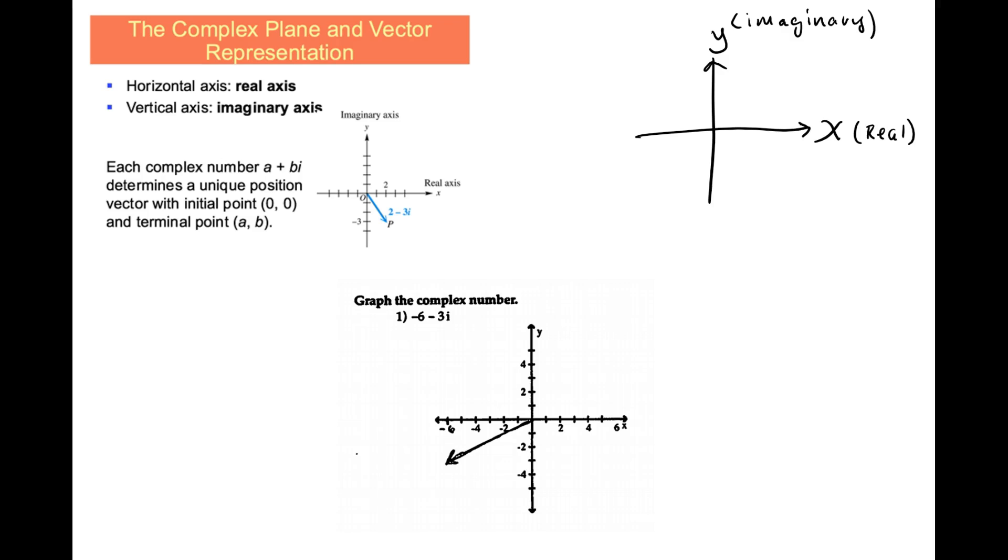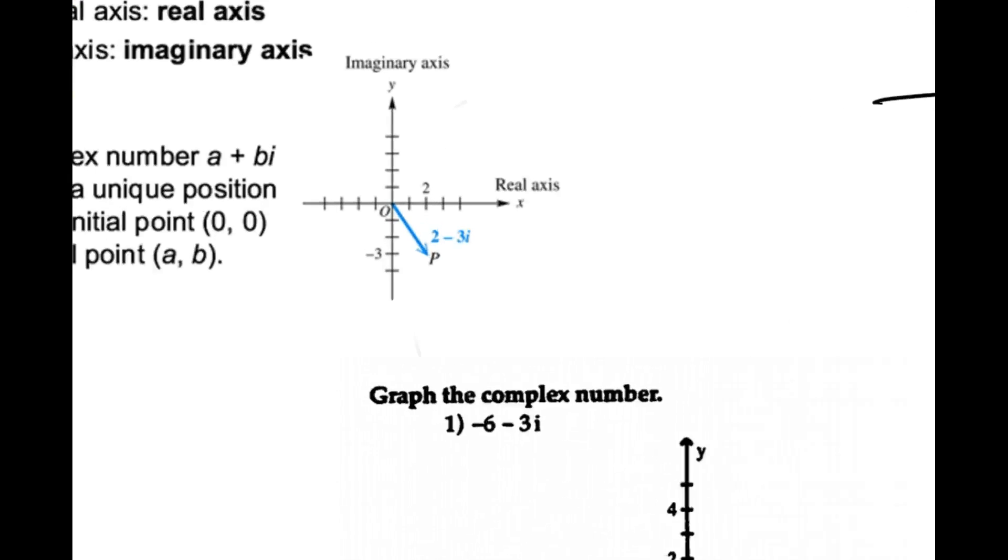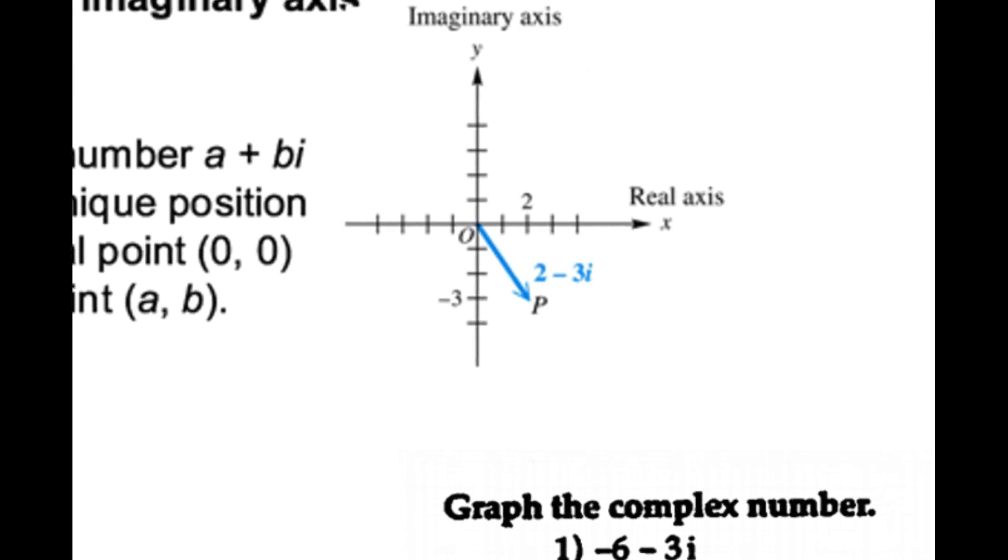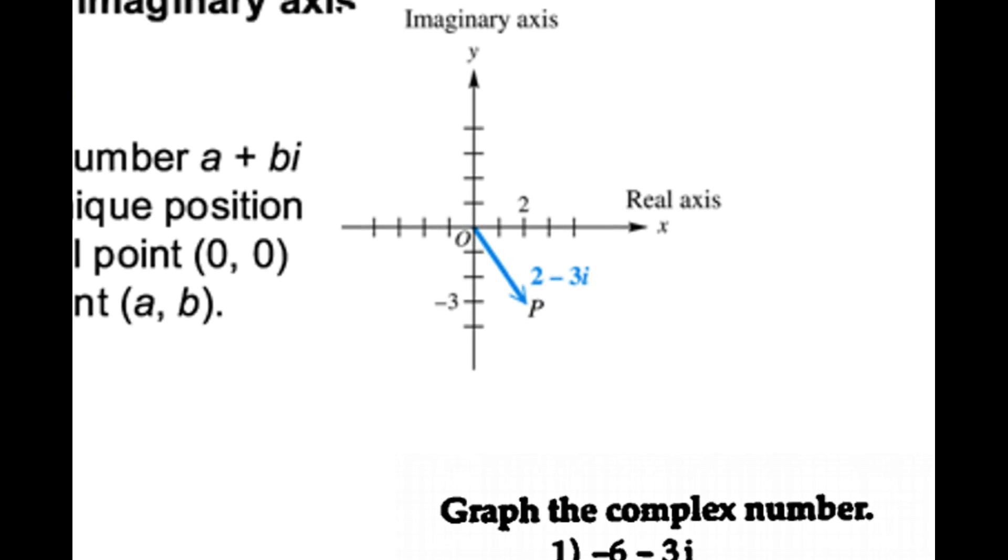If you're given a complex number, like in the case of this example, I'm going to zoom in for you. You're given this example of 2 minus 3i. What we do is go out to the right 2 units because it's positive, and then we're going to go down 3 units.